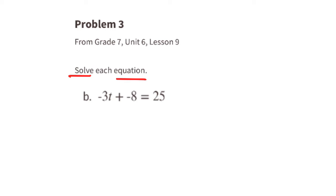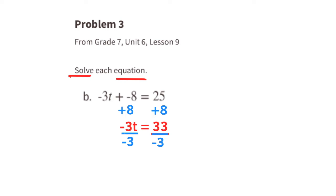B: Negative 3t plus negative 8 equals 25. We're solving for t and need to get rid of that negative 8. The opposite of negative 8 is positive 8, so negative 8 plus 8 equals 0 — they cancel out. 25 plus 8 equals 33, so the equation reads negative 3t equals 33. Divide both sides by negative 3: negative 3 divided by negative 3 equals positive 1, and 33 divided by negative 3 equals negative 11. So t equals negative 11.